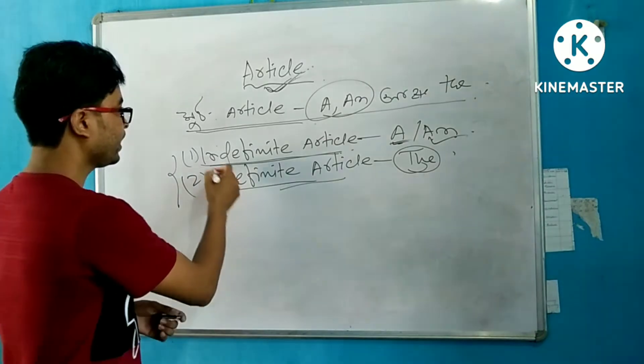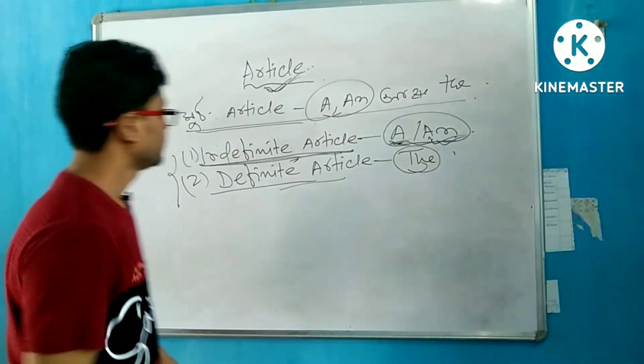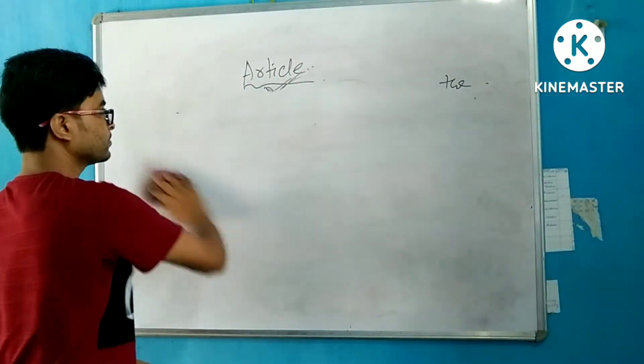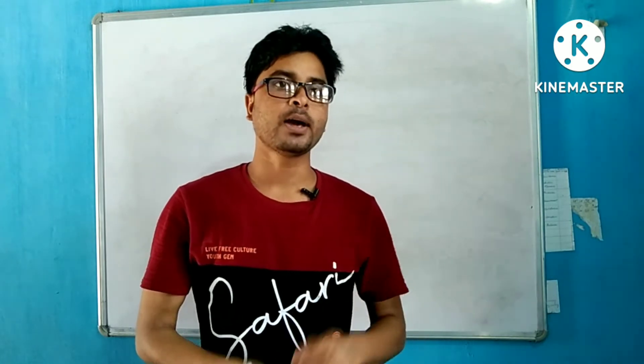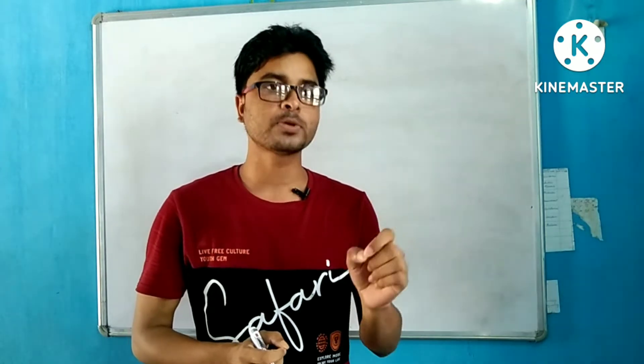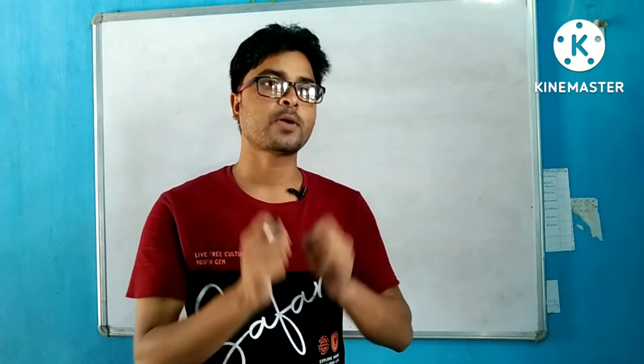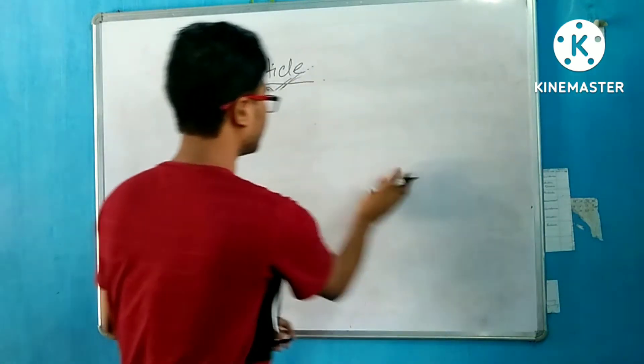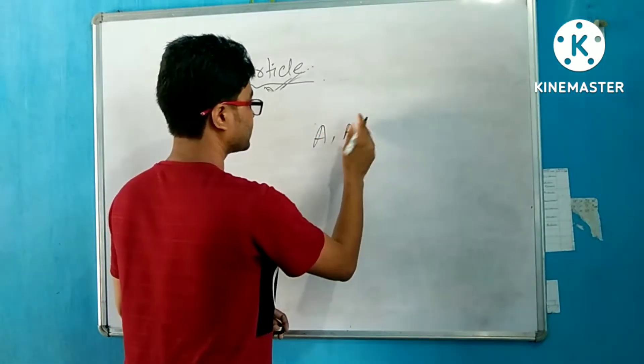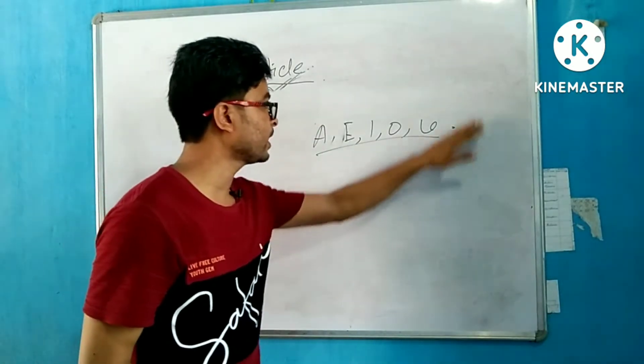We use articles before general concepts. If the word starts with a vowel sound, then we use An. If it starts with a consonant sound, then we use A. We have total five vowels in English: A, E, I, O, U.